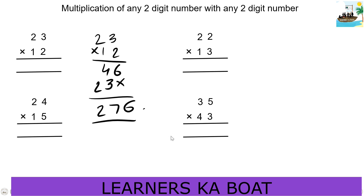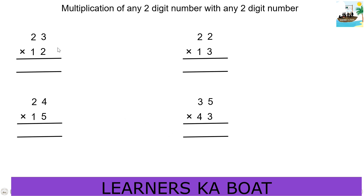So we will do it in general. In this process there are three steps. In the first step, we will do the two numbers on the right side. In the second step, we will do the two numbers in the middle. In the third step, we will do the two numbers on the left side.